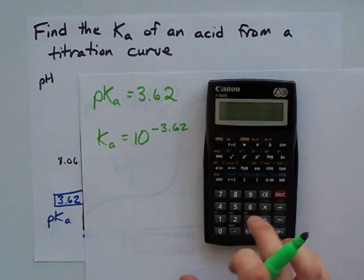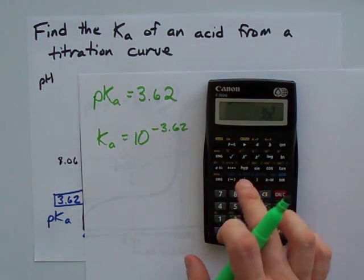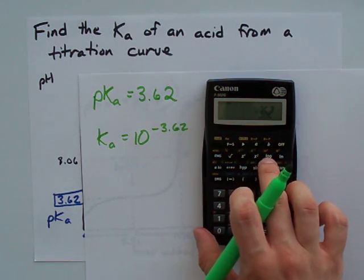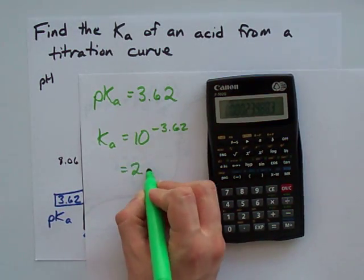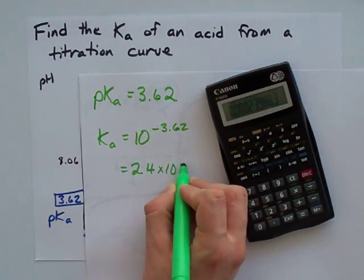On your calculator, I type 3.62 negative, and then I use the 10 to the power of button, and I get 2.4 times 10 to the minus 4.